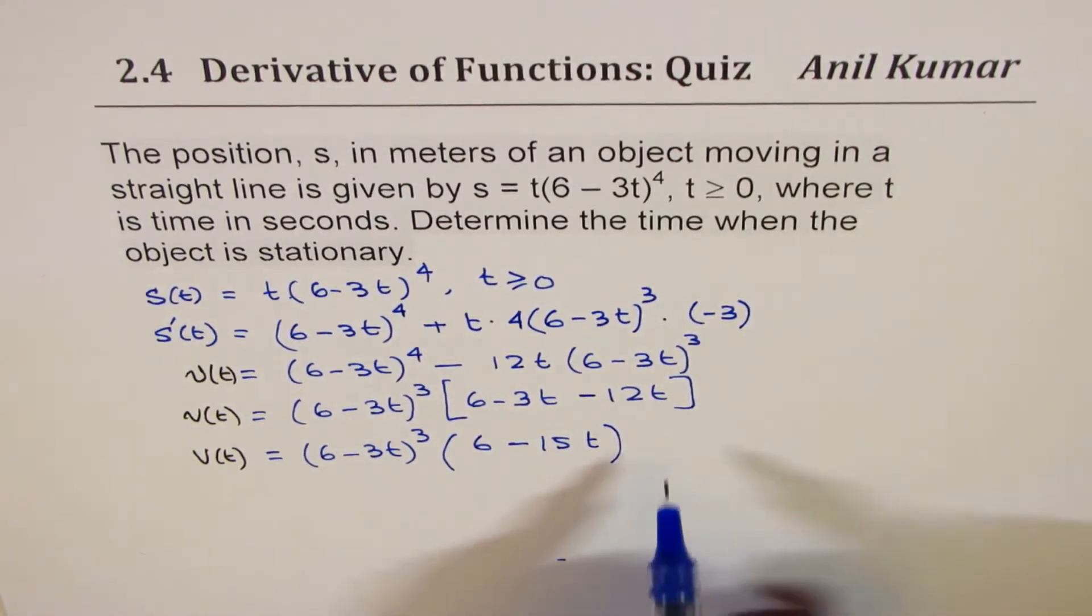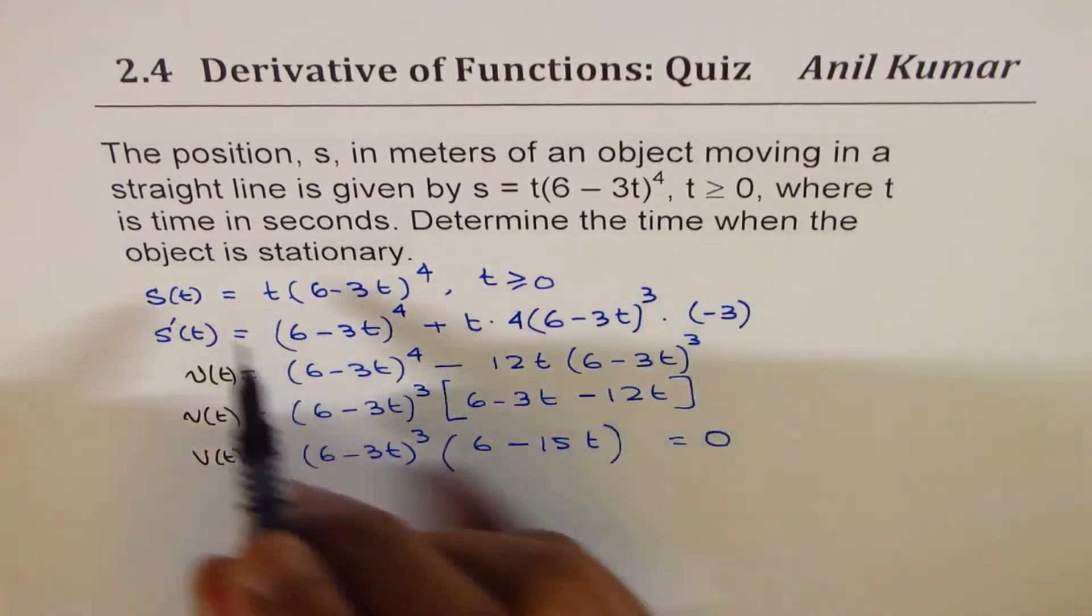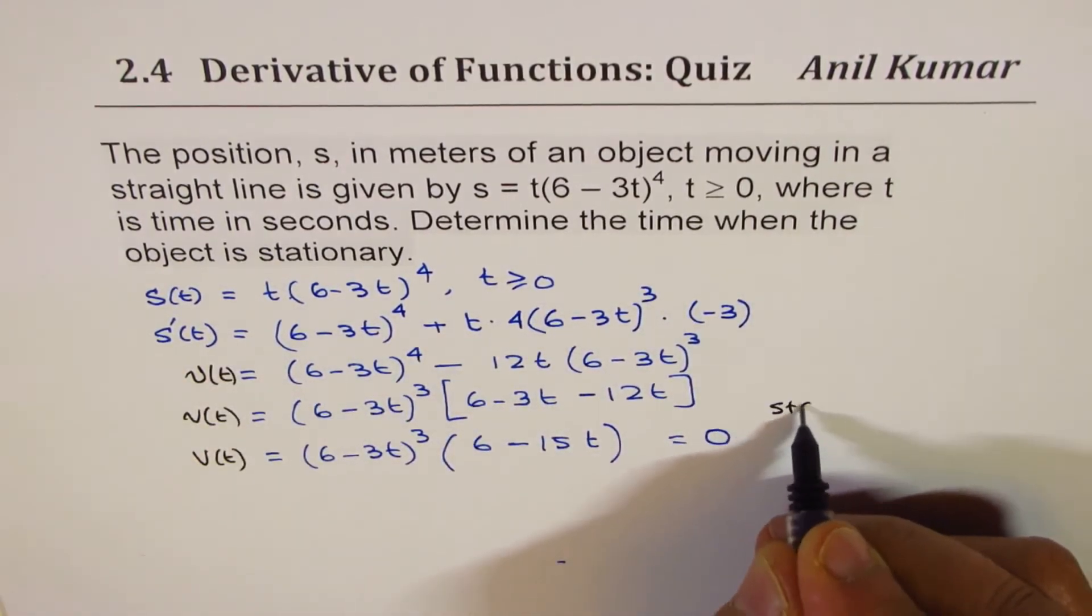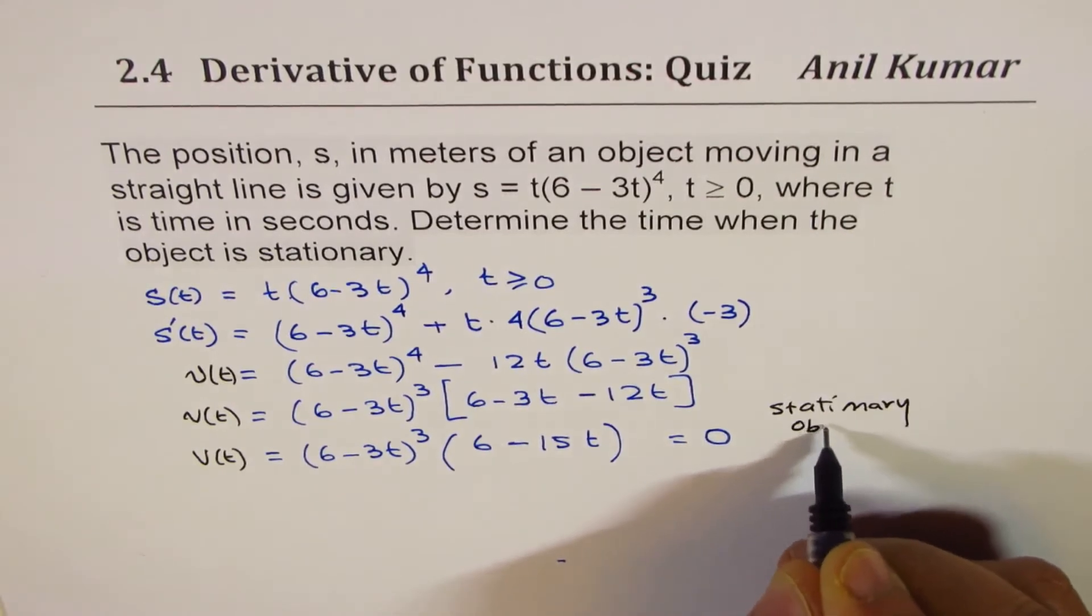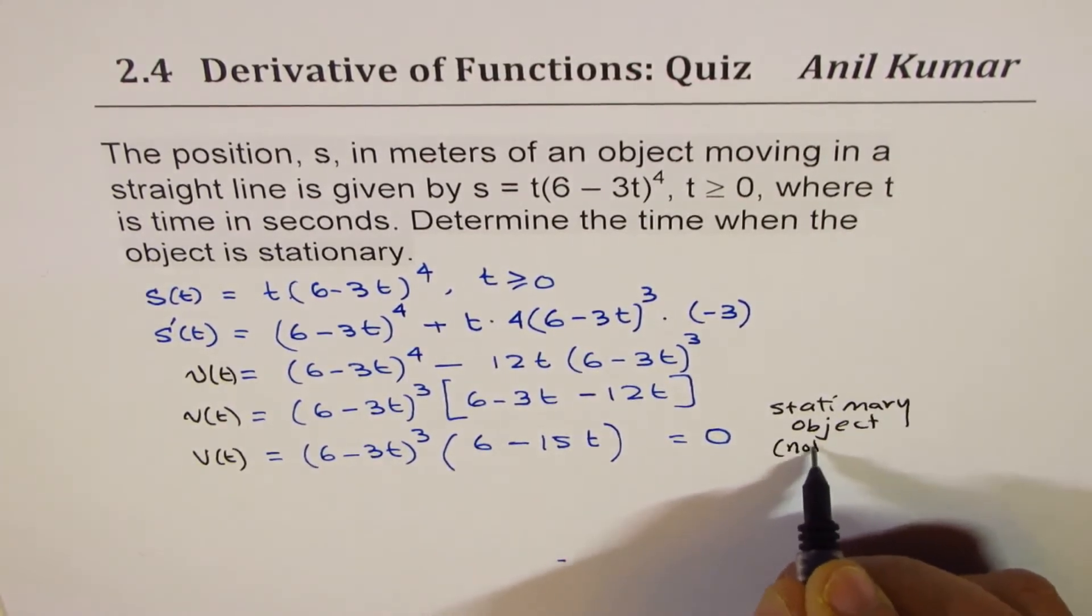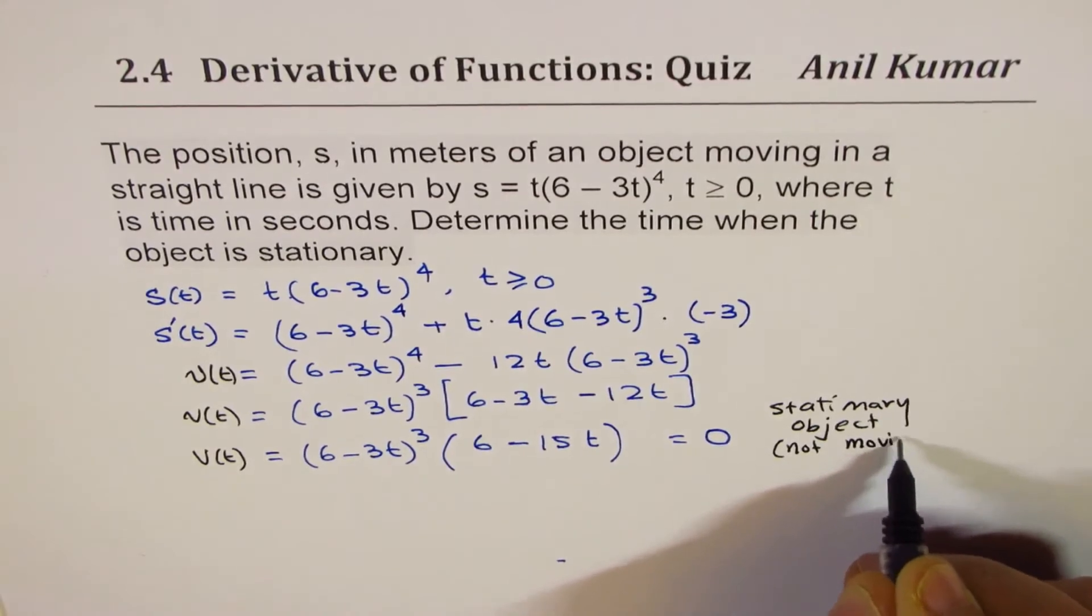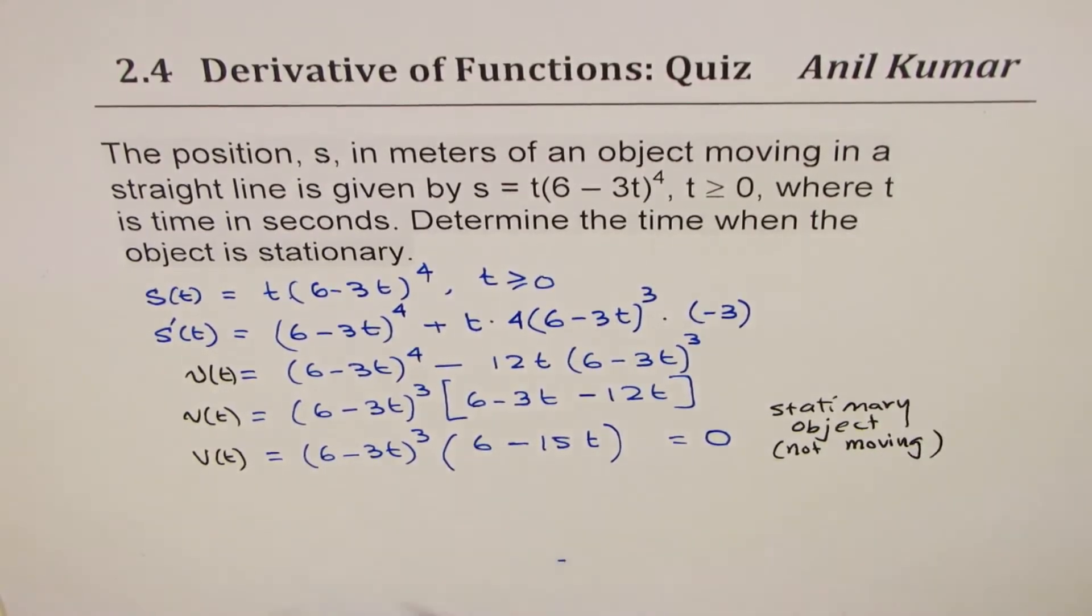Now for this to be stationary this velocity should be zero. This is for stationary object. So we want stationary object, not moving. So velocity is zero.